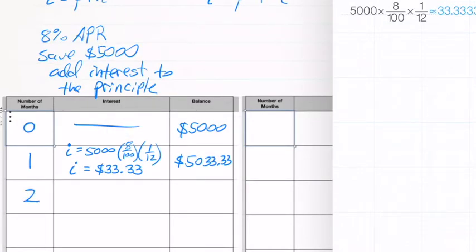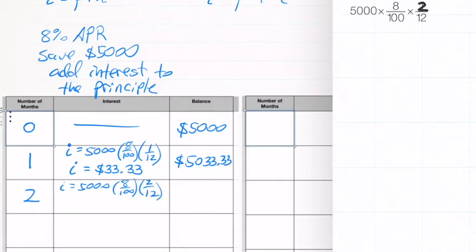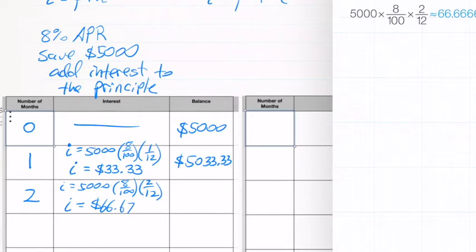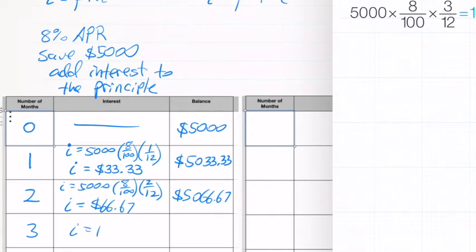At month two, the formula is the same but the time changes to 2/12, giving us $66.67 of interest added back to the principal of $5,000, so the balance becomes $5,066.67. At month three, time becomes 3/12 and we get $100 in interest, bringing the balance to $5,100. That's how simple interest works — the time keeps changing as months increase, and we always add interest back to the principal.